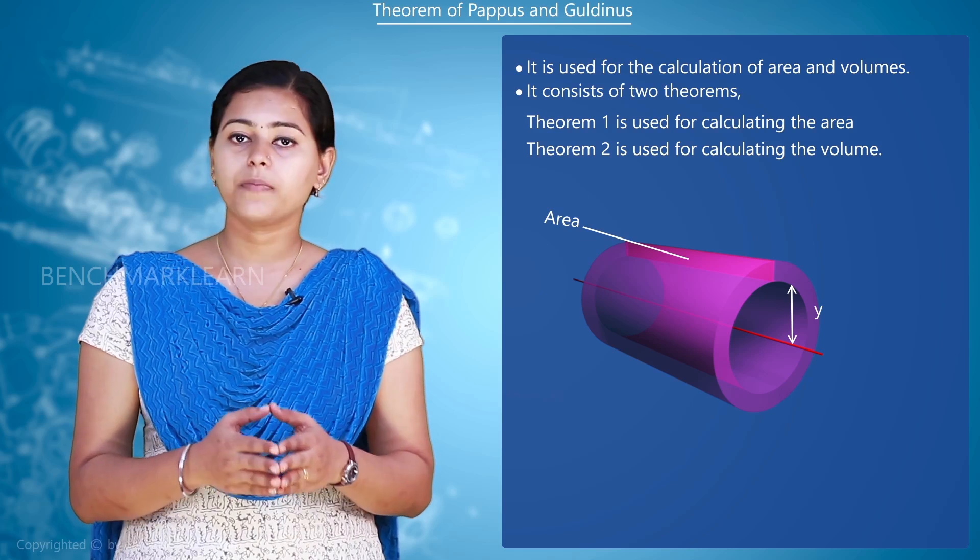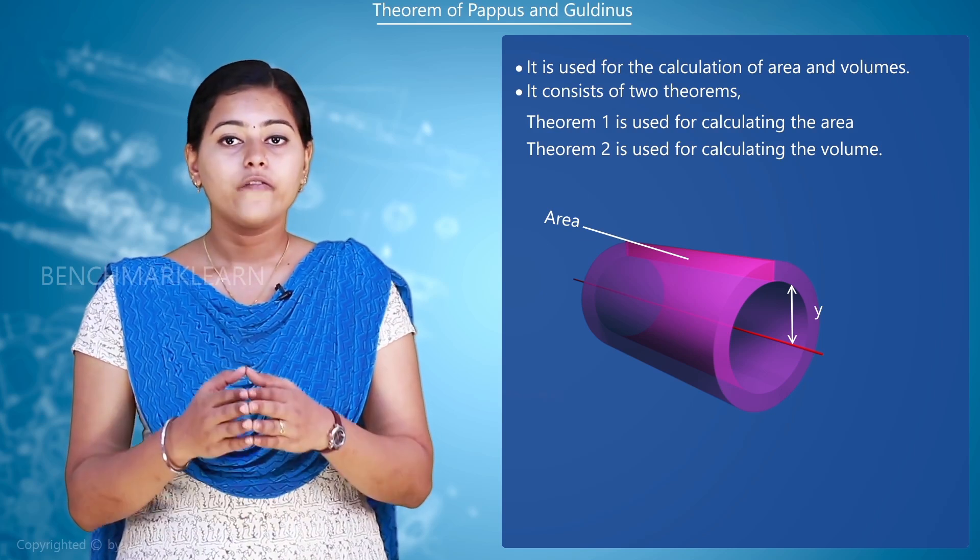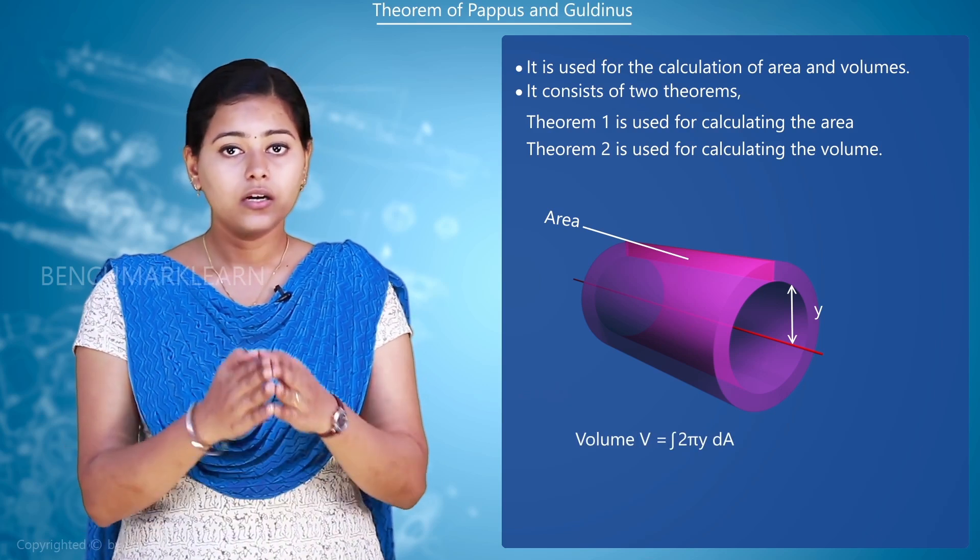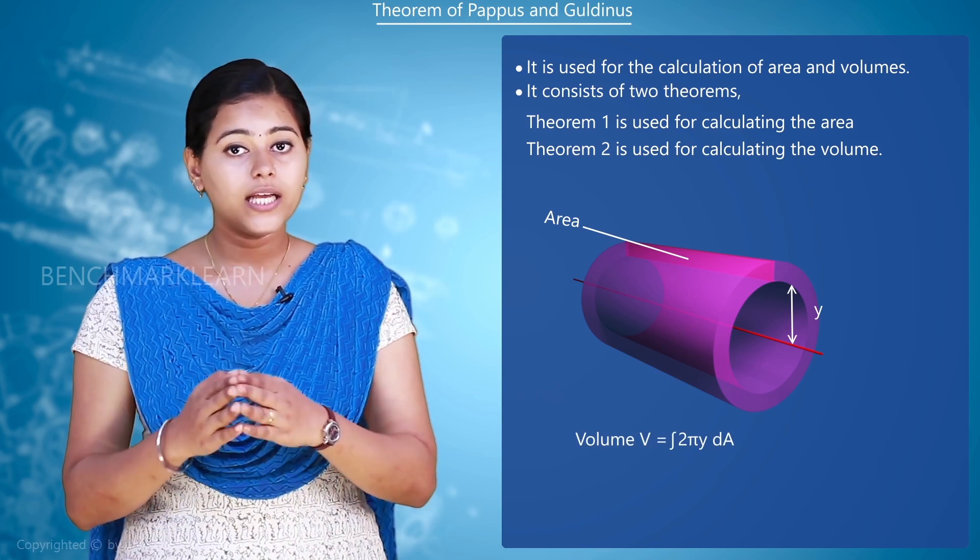In order to find the volume created by this revolving area, we apply the equation volume v is equal to integral 2 pi y into dA.